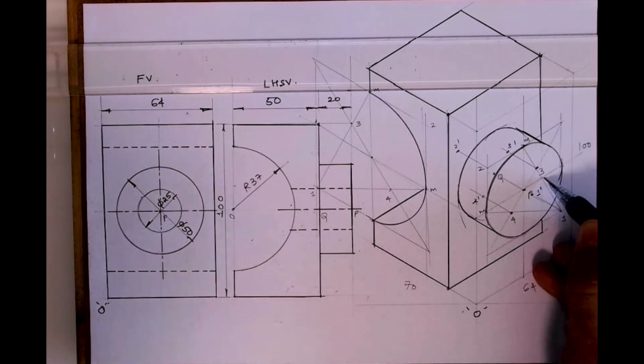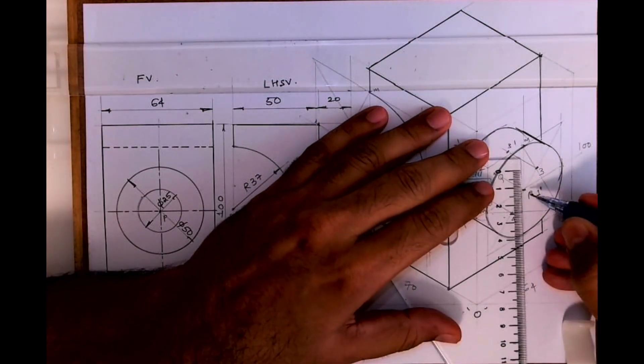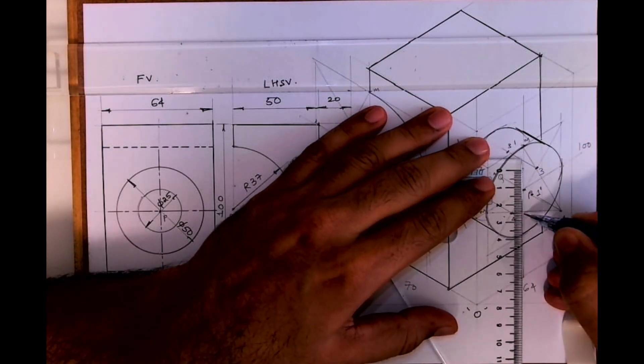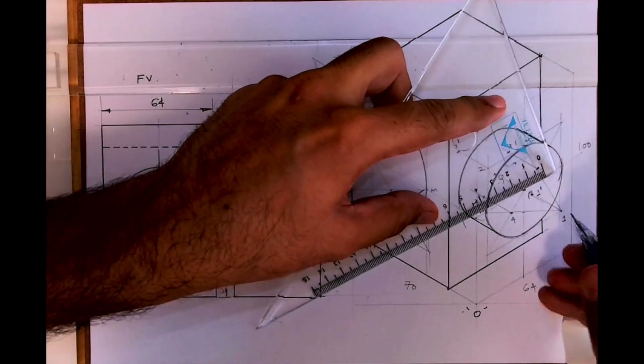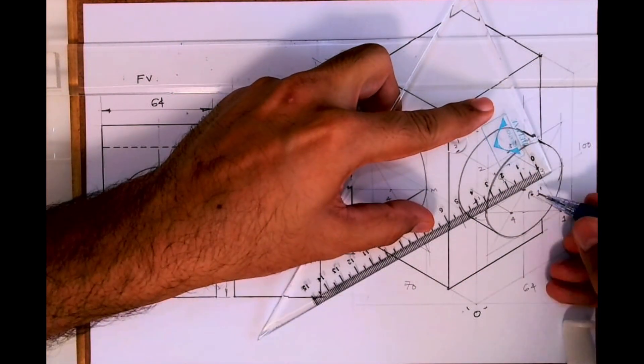Now see this, from center you take 12.5, 12.5, and again you draw rhombus. See, at times it will be very crowded in terms of lines and all.